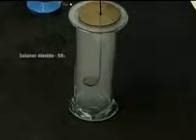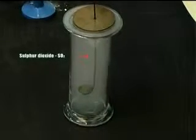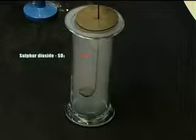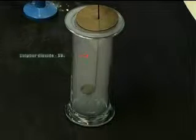To evolve the gas known as sulfur dioxide, the gas is contained in the glass jar as you see here.